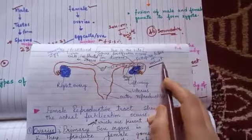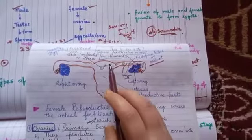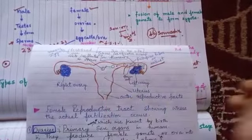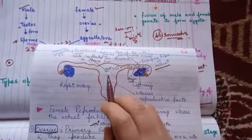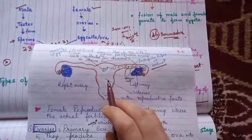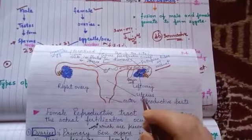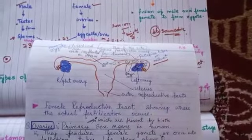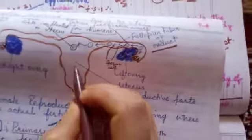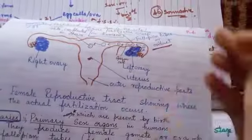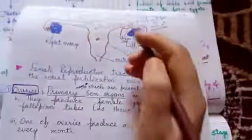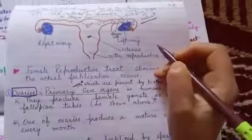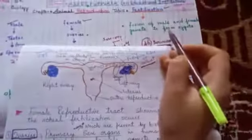Between the uterus and the ovaries is a tube-like structure called the fallopian tube, also called oviducts. The third and very important part is the uterus — the place where the embryo actually develops. This is the part where implantation occurs.